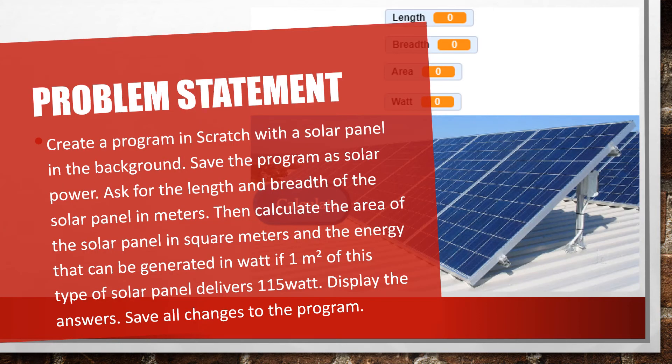Create a program in Scratch with a solar panel in the background. Save the program as solar power. Ask for the length and the breadth of the solar panel in meters. Then calculate the area of the solar panel in square meters and the energy that can be generated in watt if one square meter of this type of solar panel delivers 115 watt. Display the answers and save all the changes to your program.